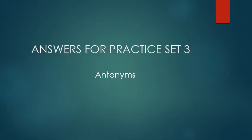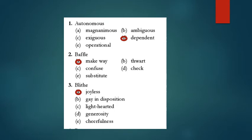Now let us see the answers for practice set number three on antonyms. Answer for the first one, autonomous: the antonym will be dependent, because exiguous means very small in size, magnanimous means very generous, ambiguous means not very clear. For baffle, the synonym is confused, but we have to look for the opposite word, and thwart means to prevent or obstruct. So for baffle, the antonym will be make way.